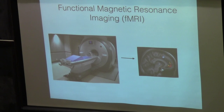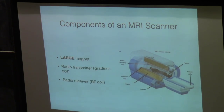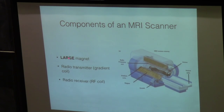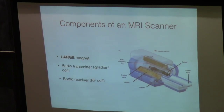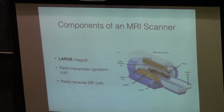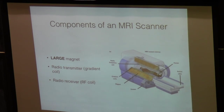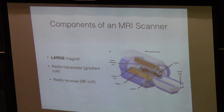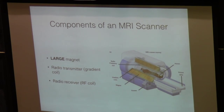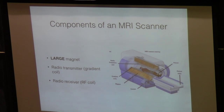We'll walk through how we get these images, starting with the components of the MRI scanner. Generally there's a really big magnet, on the order of three Teslas. There is a radio transmitter — these are the gradient coils — so you send some radio signals into the magnetic field, and then a radio receiver picks up signals returned from the atoms in your body. From that we're able to image different tissues, image blood flow, and see what's happening in your body non-invasively.